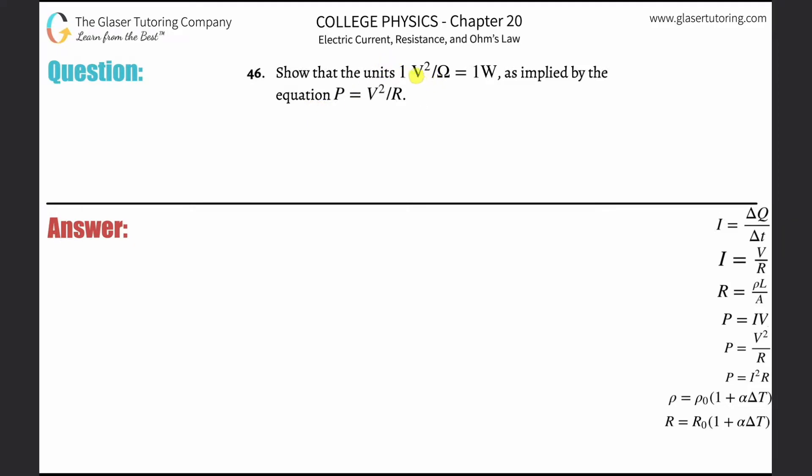Number 46, show that the units of volts squared per ohm is equal to a watt, as implied by the equation P is equal to V squared over R.